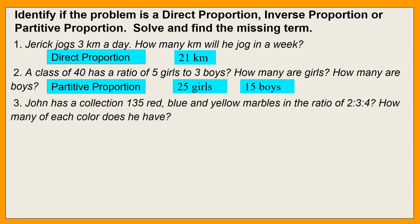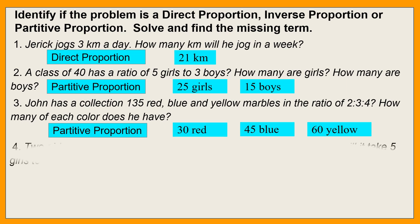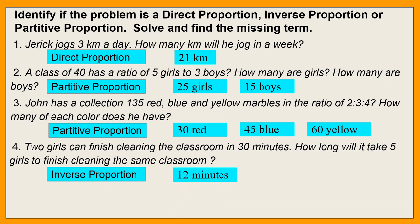Next: John has a collection of 135 red, blue, and yellow marbles in the ratio of 2 is to 3 is to 4. How many of each color does he have? Since nandyan yung total collection, this is a partitive proportion. He has 30 red marbles, 45 blue marbles, and 60 yellow marbles. Next: two girls can finish cleaning the classroom in 30 minutes. How long will it take five girls to finish cleaning the same classroom? This is an inverse proportion, and the answer is 12 minutes — mas mabilis kasi marami na ang naglilinis.